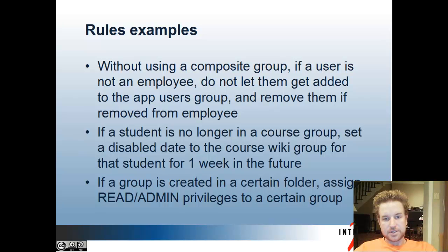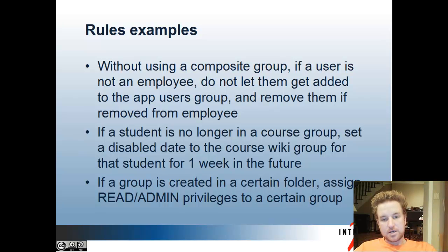Another rule example: if a student is no longer in a course group for a certain course, set a disabled date to the course wiki group for that student's membership one week in the future. The professor might not want to immediately remove the user from the wiki group, but give them a week in case they still need to access some things. The last example is privileges that can cascade through folders — if a group is created in a certain folder, assign read and admin privileges to another group, so that there could be an admin group for a folder and all its subfolders to make it easier to manage objects in grouper.